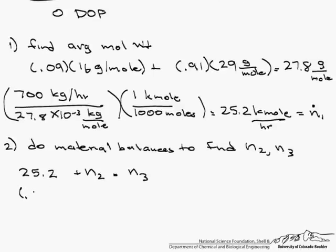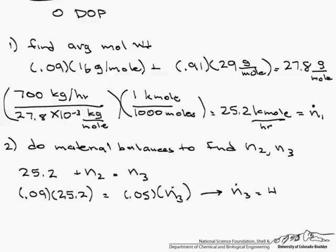So the methane balance, there is 9% of methane in the 25.2 kilomoles coming in. And there is 5% of methane in N3. So that allows us to easily solve for N3. So our N3 equals 45.4 kilomoles per hour, and now N2 equals 20.2 kilomoles per hour.